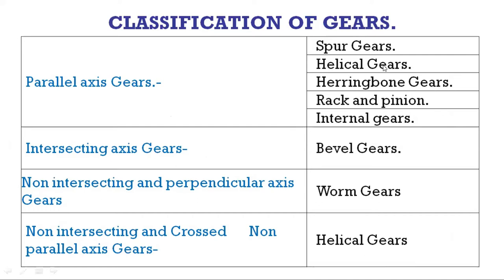For parallel axis gears: spur gears and helical gears — in helical gears we have single helical and double helical gears. The double helical gear is also known as a herringbone gear, but there is a minute difference between double helical and herringbone gears, which we will discuss in coming classes. Then there is rack and pinion. If you want to transmit power between parallel shafts with both shafts rotating in the same direction, internal gears are used.